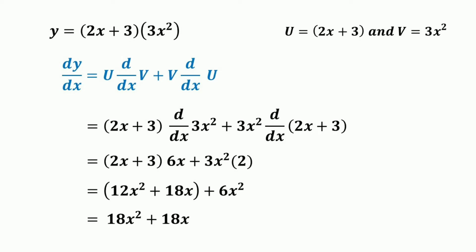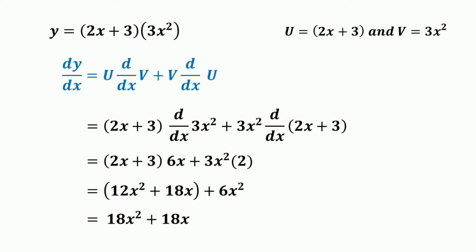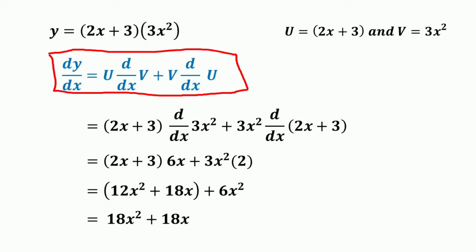Consider the function y is equal to (2x + 3) into 3x squared. We have two functions here: the first function is (2x + 3) and the second function is 3x squared. Both are differentiable functions. So the derivative dy/dx equals the first function into the derivative of the second function, plus the second function into the derivative of the first function.